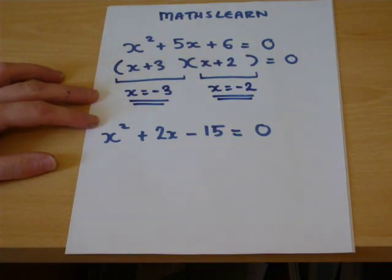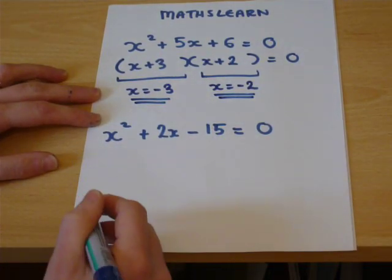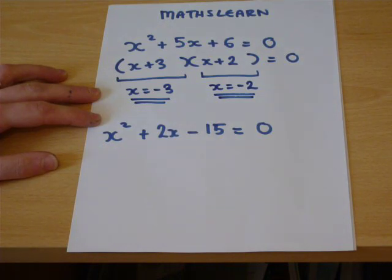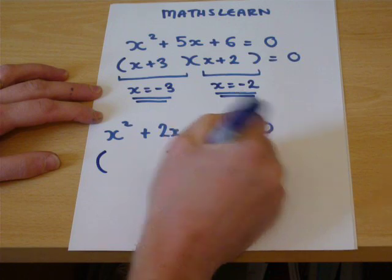I will now talk through a few more examples. So remember, we're looking for numbers which times to make minus 15 but combine somehow to make plus 2. Now, there are not many factors of 15.